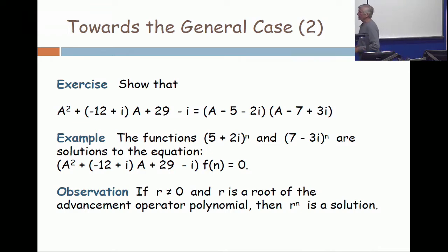Look at that first line. A squared plus minus 12 plus i times A plus 29 minus i equals A minus 5 minus 2i times A minus 7 plus 3i. That has like an 80% chance of being correct. Maybe even less. But if it's not correct, there's something close to it which is correct.